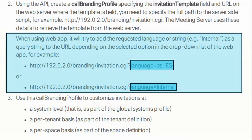When using the web app, it will try to add the requested language string — for example, 'internal' — as the query string for the URL, depending on the selected option in the drop-down list when the user is choosing a language. For example, http://192.0.2.0/branding/invitation.cgi is in our invitation field. When the user drops down and chooses Spanish, the web app will append 'language=es_ES' to that URL. 'es' is Spanish, and 'ES' as the country region means Spain. Or you can do something like 'language=internal'. We use the call branding profile to customize invitations at a system level.